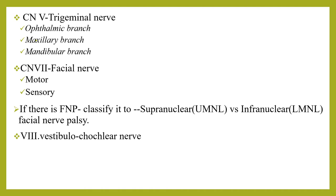We should also perform tuning fork tests — Weber and Rinne — to assess air and bone conduction. The Weber test is done by placing a vibrating tuning fork on the vertex of the head and asking the patient whether the sound is equal in both ears. The Rinne test compares air and bone conduction: the vibrating tuning fork is placed on the mastoid process, and when the patient signals the sound has gone, the fork is quickly moved to the ear canal to check if the patient still hears the vibration.